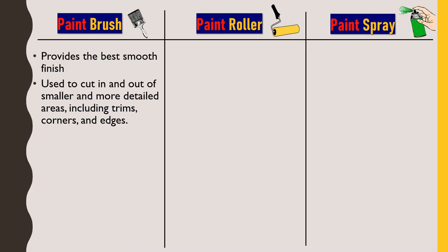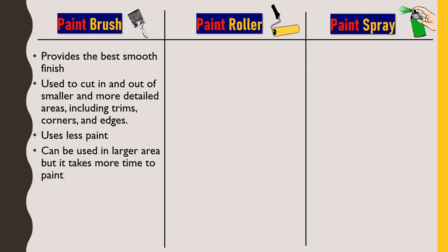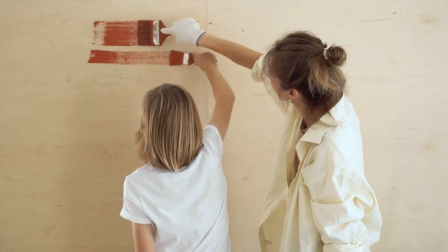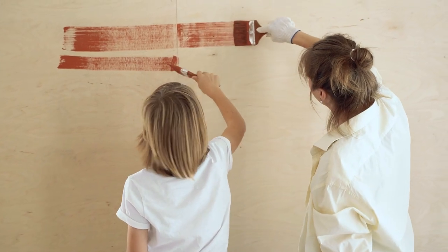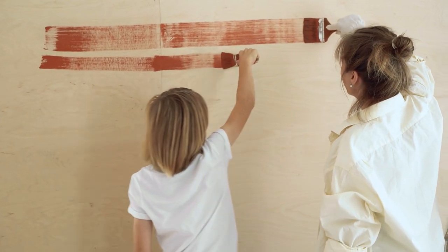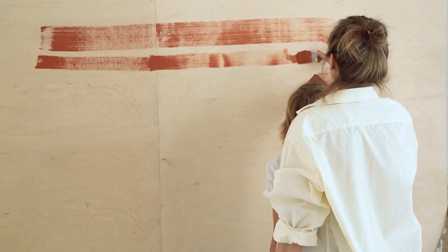Any corner or edge can be painted with this brush, and for this, different sizes of brushes are available which we can use as per requirement. Next, it uses less paint compared to a roller or a spray gun — a paint brush utilizes minimum paint and covers the entire area. It can be used in larger areas, but it takes more time to paint.